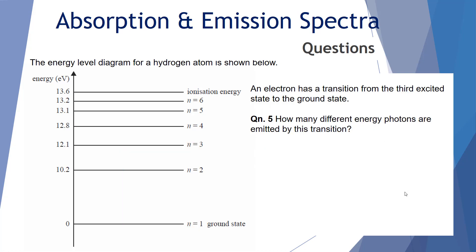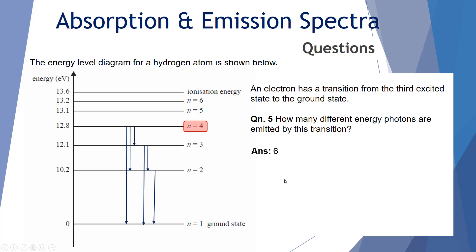Question 5: An electron makes a transition from the third excited state to the ground state — that is from n equals 4 down to n equals 1. How many different energy photons are emitted? Considering all possible transitions, we end up with 1, 2, 3, 4, 5, 6 different transitions, which generates 6 different photon energies.